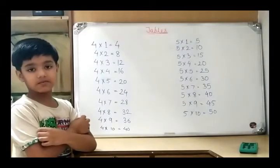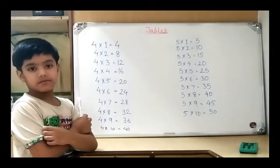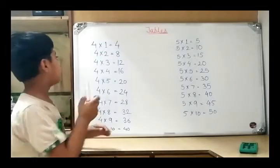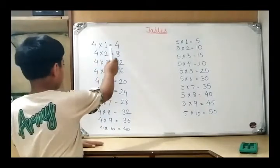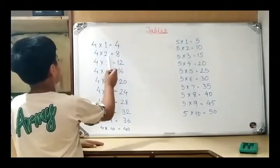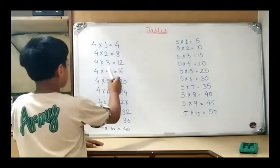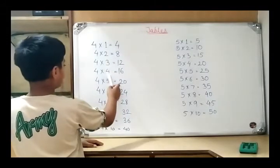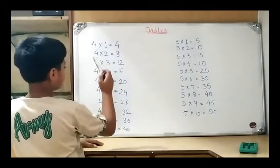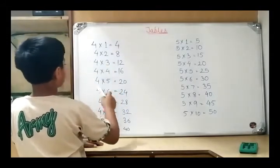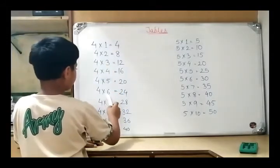Multiplication table of 4 and 5. 4 1s are 4, 4 2s are 8, 4 4s are 16, 4 5s are 20, 4 6s are 24.